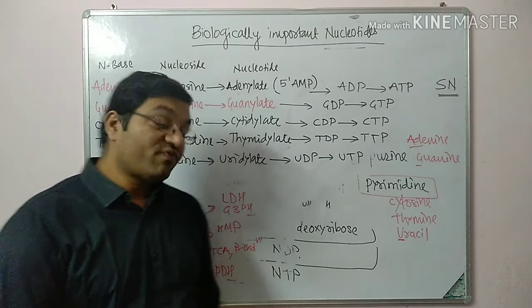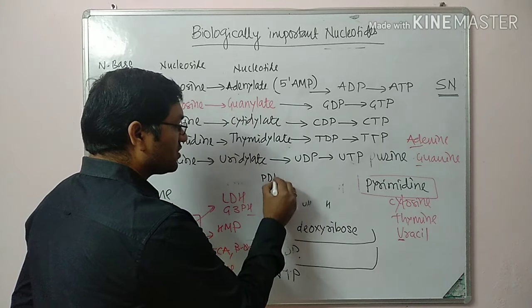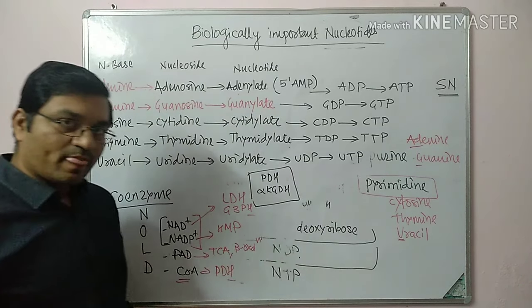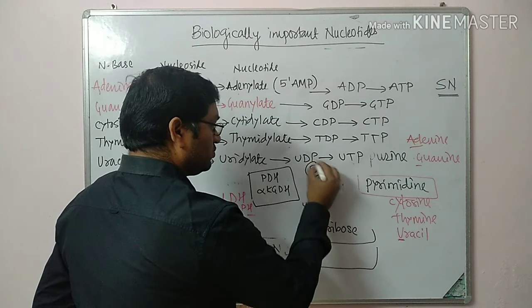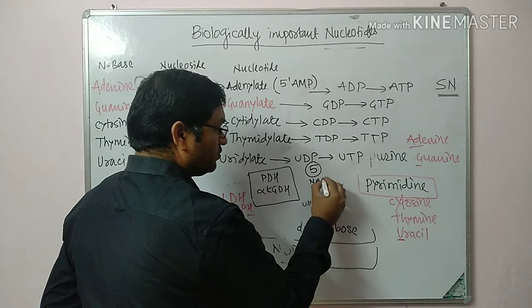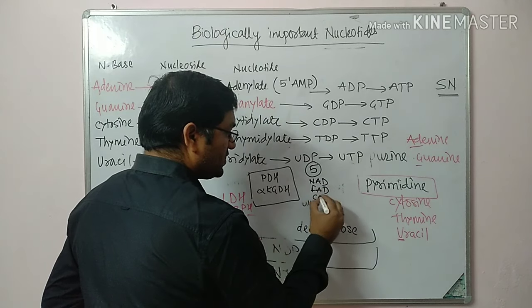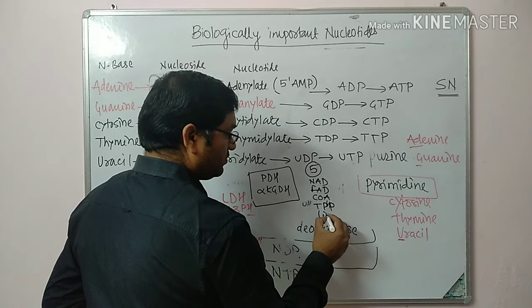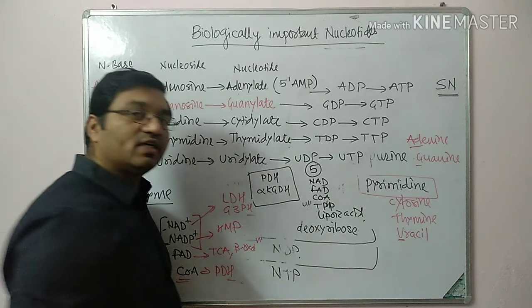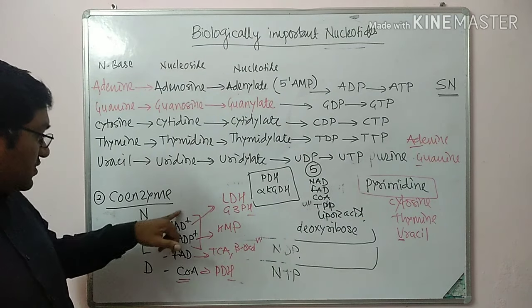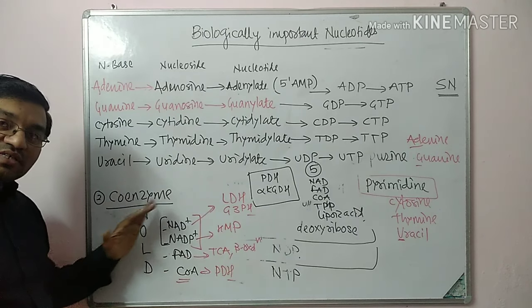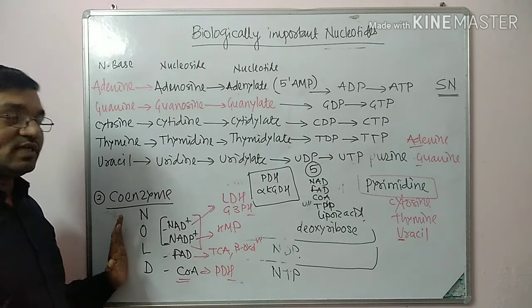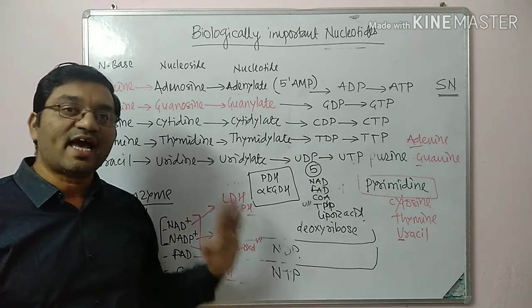Remember: one enzyme which requires 5 coenzymes is the pyruvate dehydrogenase complex or alpha-ketoglutarate dehydrogenase complex. These two enzymes require 5 coenzymes: NAD, FAD, coenzyme A, thiamine pyrophosphate and lipoic acid. This is an important MCQ. So nucleotides acting as coenzymes is the second important function of nucleotides.